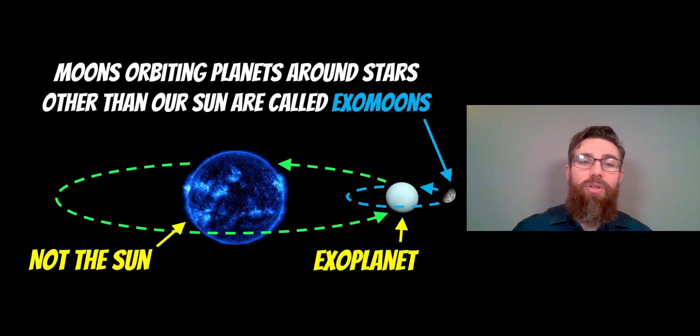And a moon or exomoon would be orbiting that exoplanet, which would be orbiting a star that is not our sun. So these are moons orbiting planets outside of our solar system, which we then refer to as an exomoon.